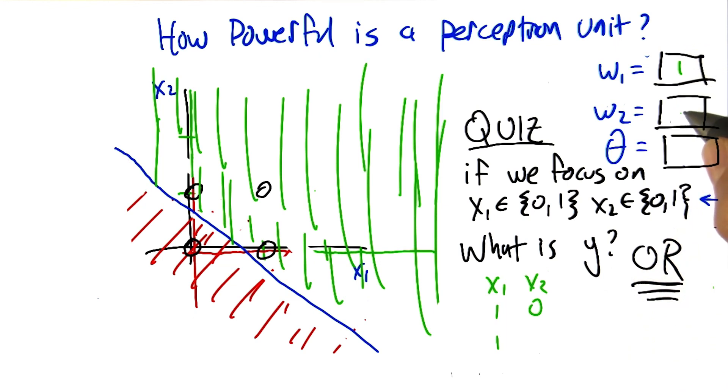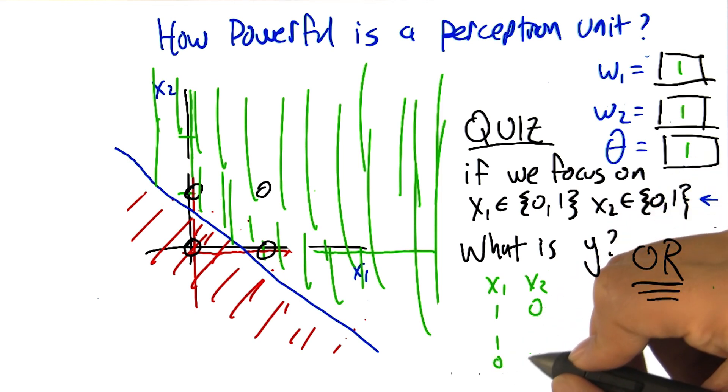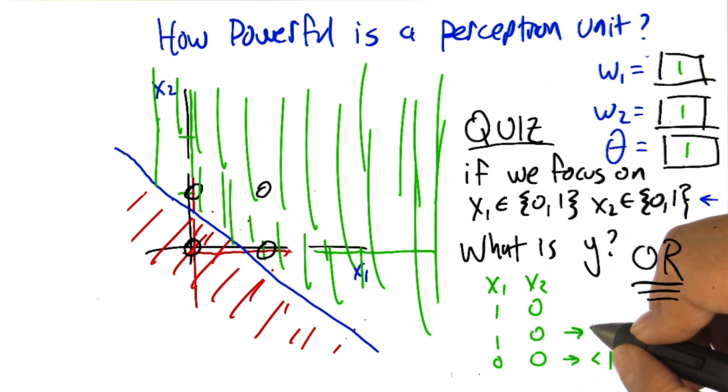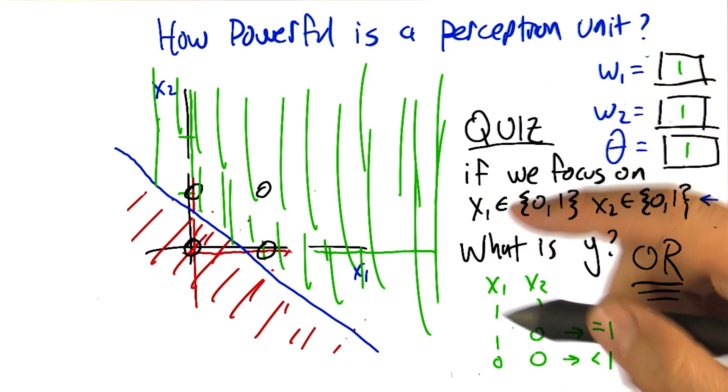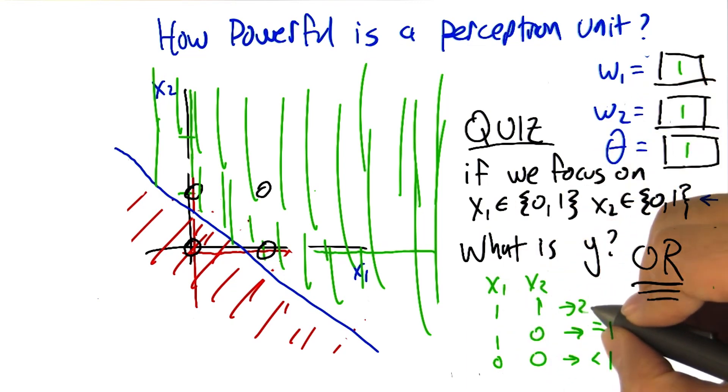What about weight two? Well, we do exactly the same thing. So we set weight two equal to one. And that means that in the case where both of them are zero, you get zero plus zero, which gives you something less than one. If one of them is one and the other is zero, you get one, which gives you right at the threshold. And if both of them are one, then you get two, which is still greater than one.